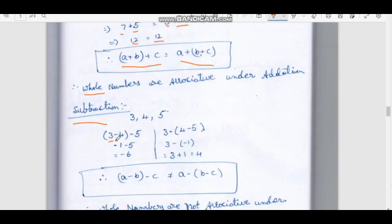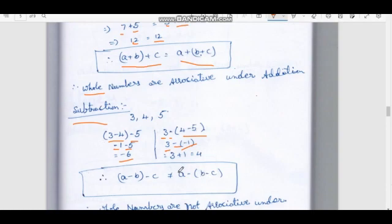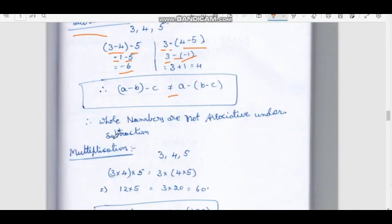A minus B minus C: (3 − 4) − 5. So 3 minus 4 equals minus 1, and minus 1 minus 5 equals minus 6. Now the other way: 3 − (4 − 5) = 3 − (minus 1) = 4. Since minus 6 is not equal to 4, therefore (A − B) − C is not equal to A − (B − C).